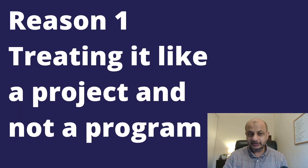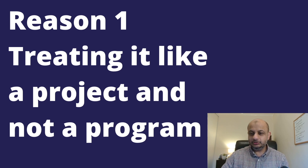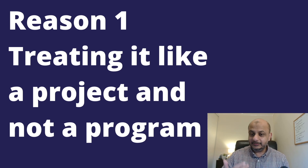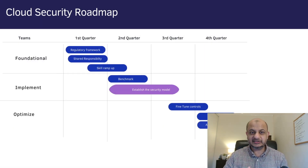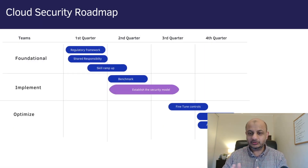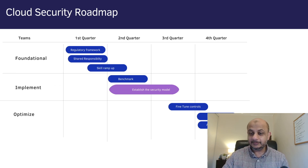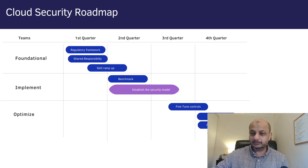The first reason I've seen — and this is very common — is that cloud security is treated like a project and not a program. A project is a one-time thing: it has a start and a finish, and once it's finished people forget about it. A program is something continuous. If you treat cloud security like an initiative or a project and forget about it, that is easily one of the biggest mistakes you can make.